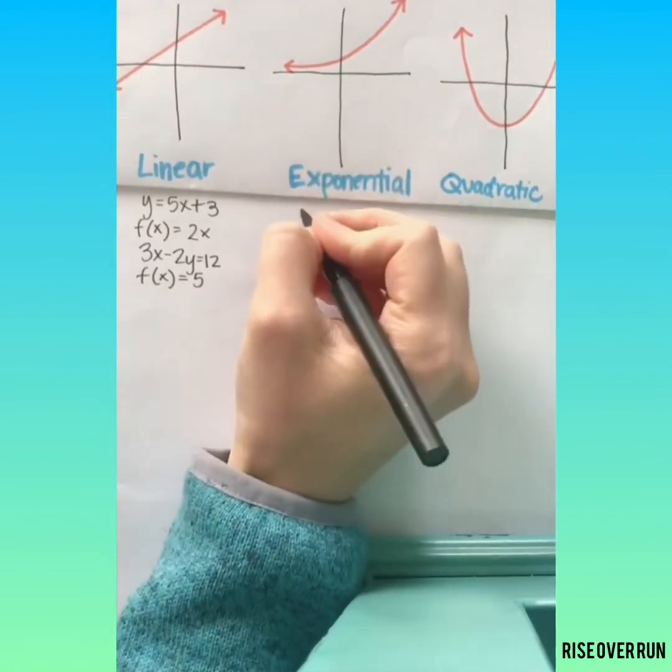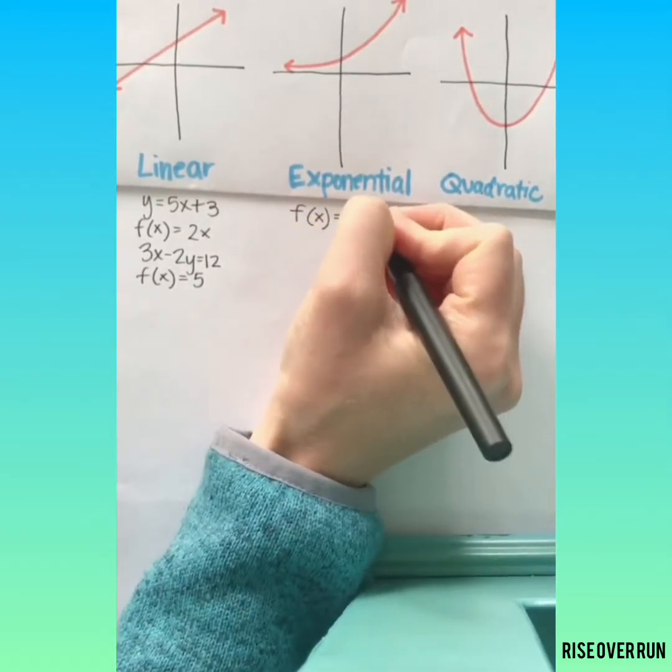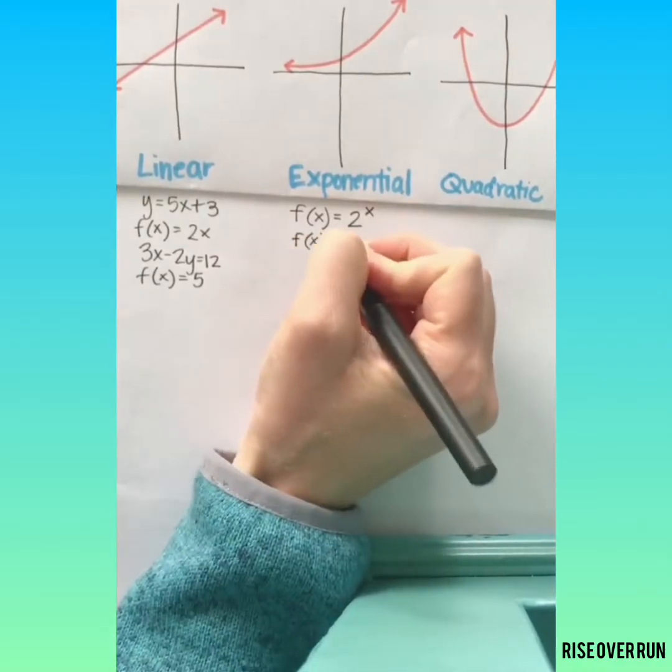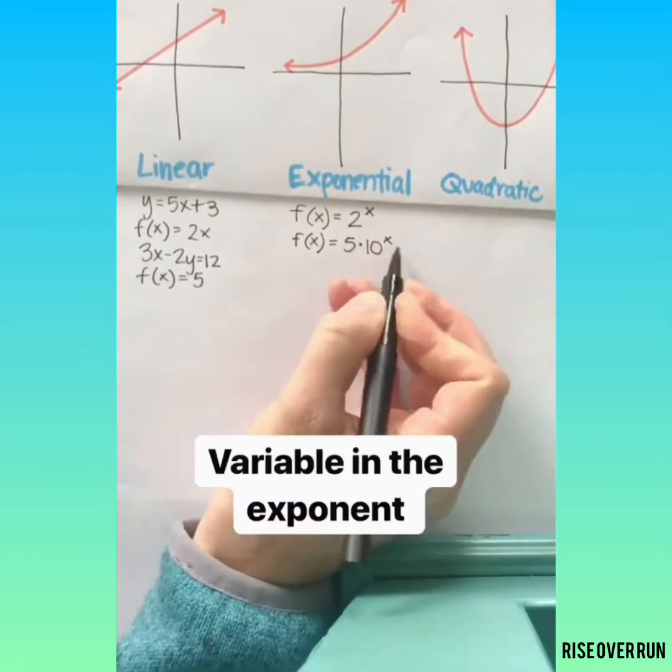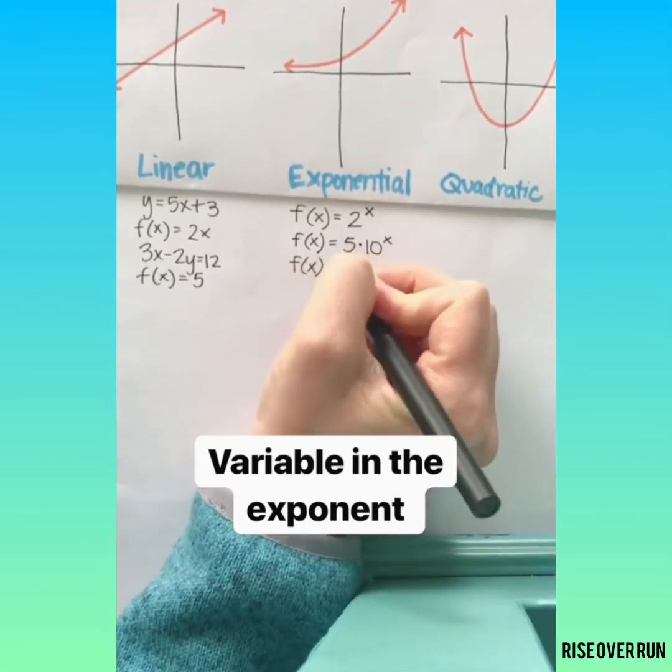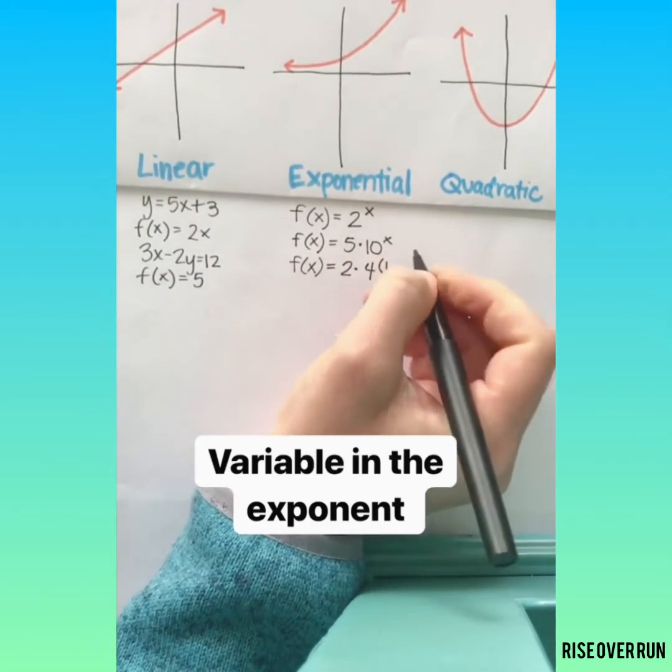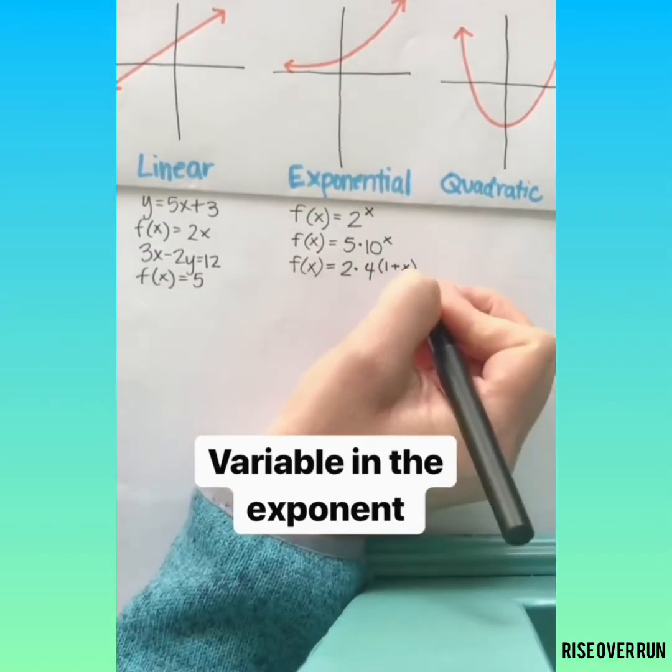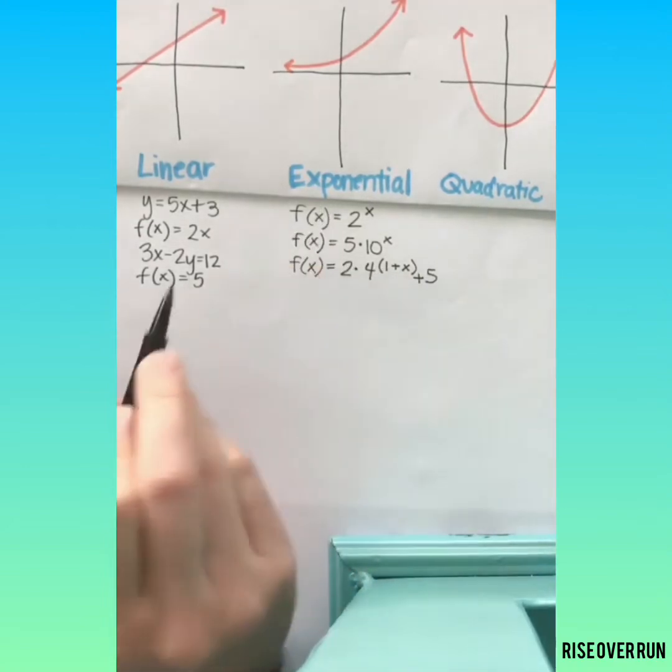Exponential functions will have equations where your variable is in the exponent. We might multiply by another number but the variable has to be in that exponent. You might even have some other numbers in the exponent. And you might even have a constant. But just look for that variable to be in the exponent and you know it's exponential.